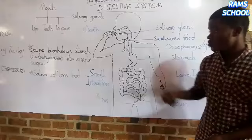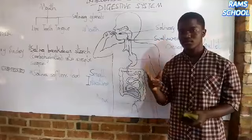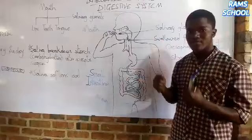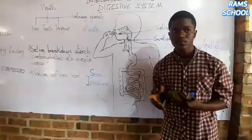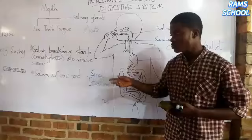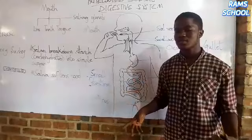When food enters the stomach, it stays there for 3 good hours. During that time, digestion is more active. The stomach produces some digestive juices called gastric juice, and this gastric juice breaks down protein into other simpler substances.